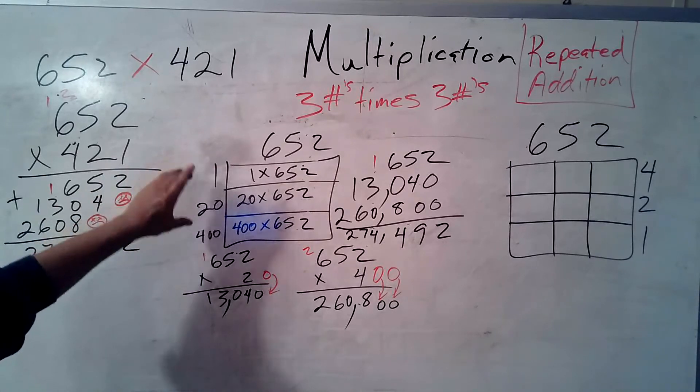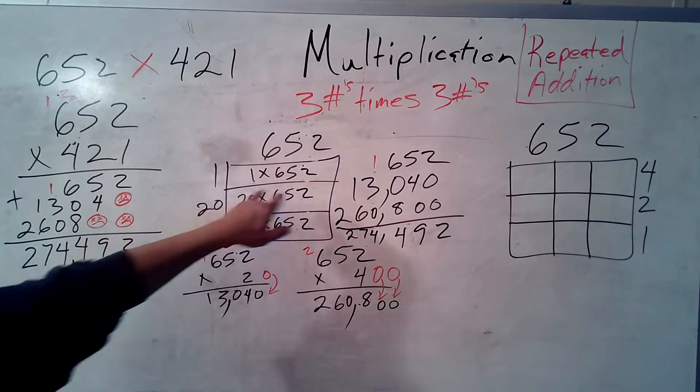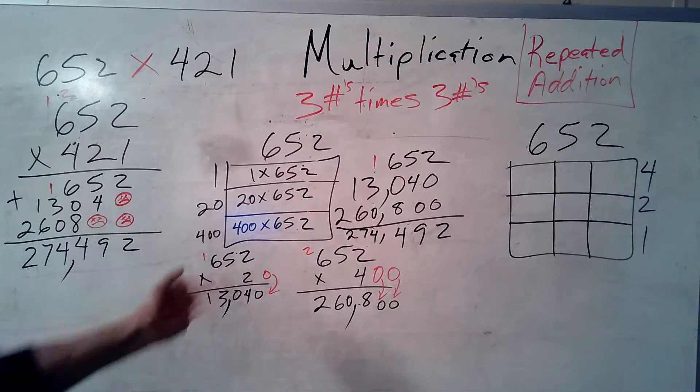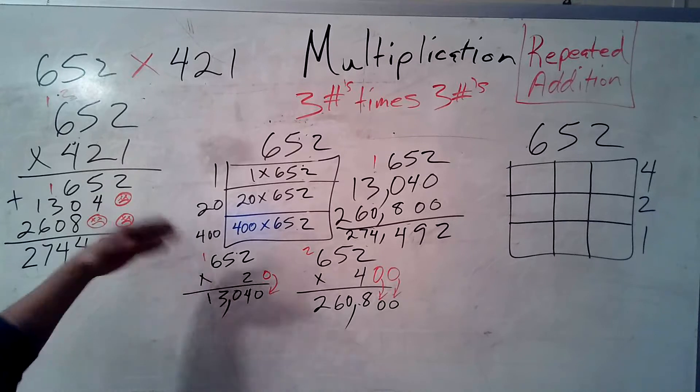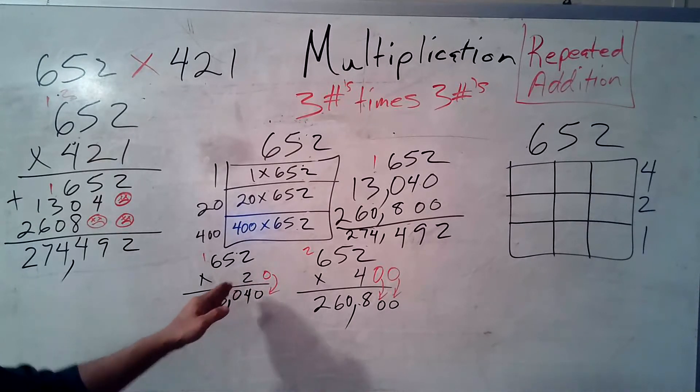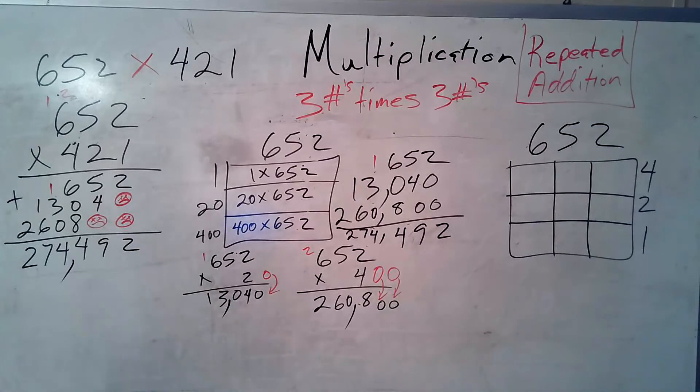20, because that's my tens place, 2 times 652 is right here. 2 times 2 is 4. 2 times 5 is 10. Write down the zero. Carry the 1. 2 times 6 is 12. Plus 1 more is 13. But remember, that is 20, not 2. So add your 0. So 13,040.